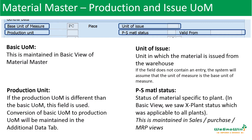Here we see the basic unit of measure, which was maintained in the basic view of material master — which is the fundamental measurement of the material. And then we see the production unit. There are some cases where the basic unit of measurement may be kilogram, but when you do the production, we may be doing it in meters. When you buy some steel, you may buy in weight kilograms, but when you use it in production, you may do it by length. So the production unit is a different unit.